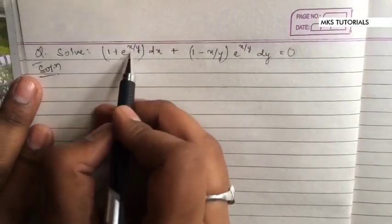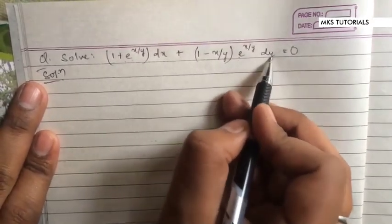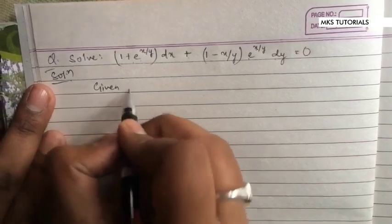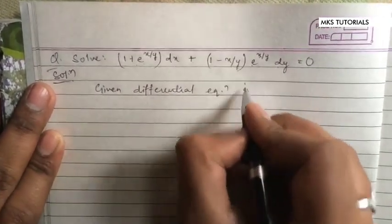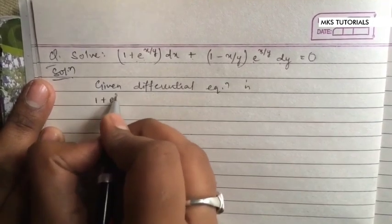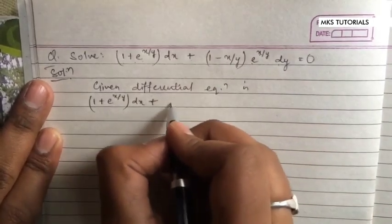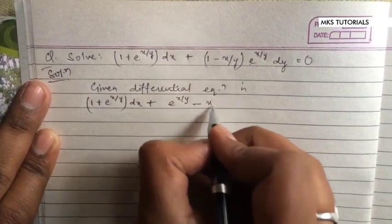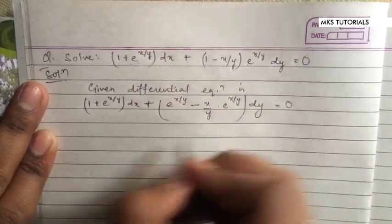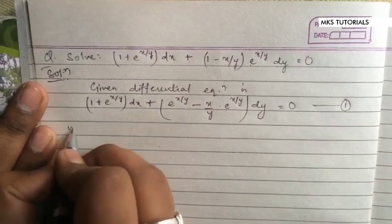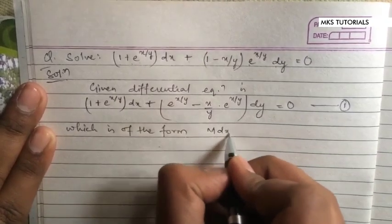Next question: solve (1 + e^(x/y)) dx + (1 - x/y) · e^(x/y) dy = 0. The given differential equation is (1 + e^(x/y)) dx + (x/y - x/y · e^(x/y)) dy = 0. Let this be equation number 1, which is of the form M dx + N dy = 0.